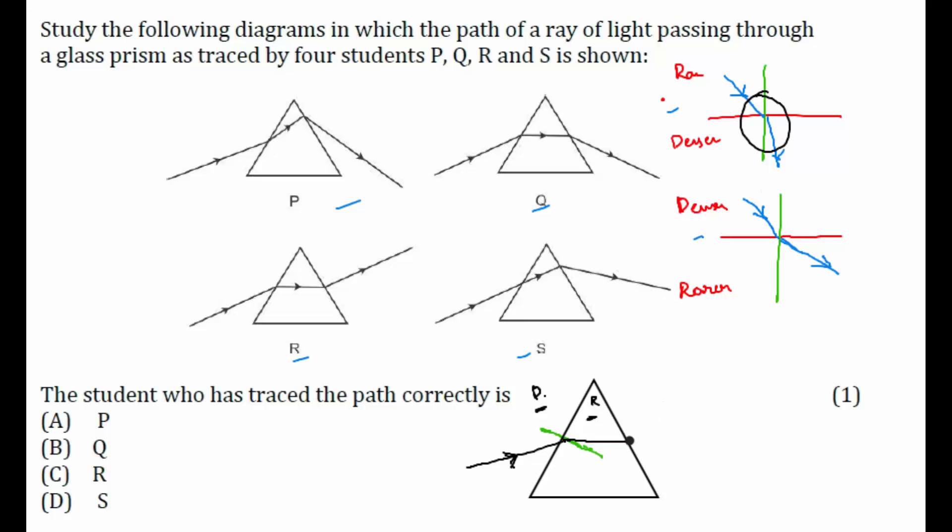Now at this point, what will happen? If I draw a normal at this point, what should happen? It is moving from rarer to denser medium, right? So it is moving from rarer to denser medium. So after refraction, how will it move? It should move away from the normal. So it's moving like this.